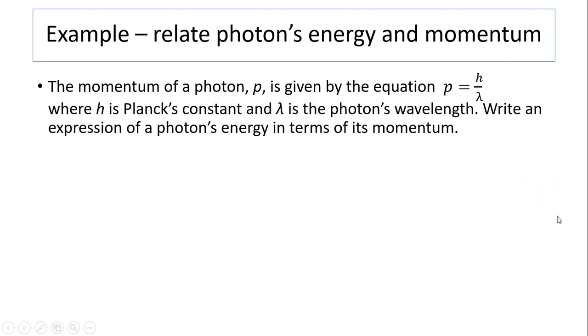Let's take a look at this example. Relate photon's energy and momentum. The momentum of photon, p, is given by this equation, p equals h over lambda. Where h is Planck's constant, lambda is photon's wavelength. Write an expression for photon's energy in terms of its momentum. Energy is h times f. f equals c over lambda. So, I rearranged this equation. This becomes h over lambda times c. h over lambda is p. So, e equals p times c.